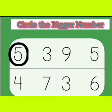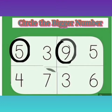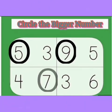Next, the numbers are nine and five. Yes, nine is further away from zero on the number line, so nine is bigger. The next box has numbers four and seven. Which one is bigger?